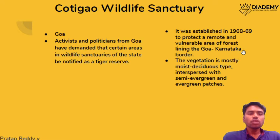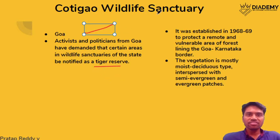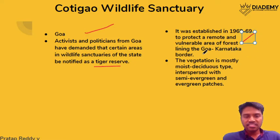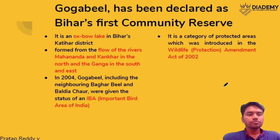The first topic is Kotygaum Wildlife Sanctuary. Please remember from the word 'Goa' — this is located in Goa. It is in the news because activists and politicians want this sanctuary to be declared as a tiger reserve. It became a wildlife sanctuary in 1968-69 and is on the border of Goa and Karnataka. The vegetation here is moist deciduous type with a spread of semi-evergreen forest.